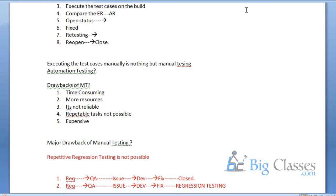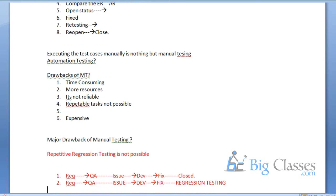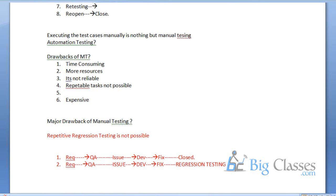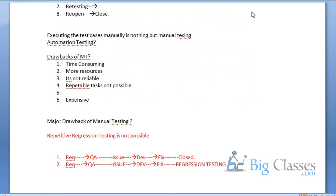This is called regression testing. For doing regression testing repeatedly by manually is not possible. To overcome this, we take the help of automation testing. The major drawback of manual testing is that frequent regression testing is not possible. If anyone asks in an interview about manual testing drawbacks, this is the key answer.